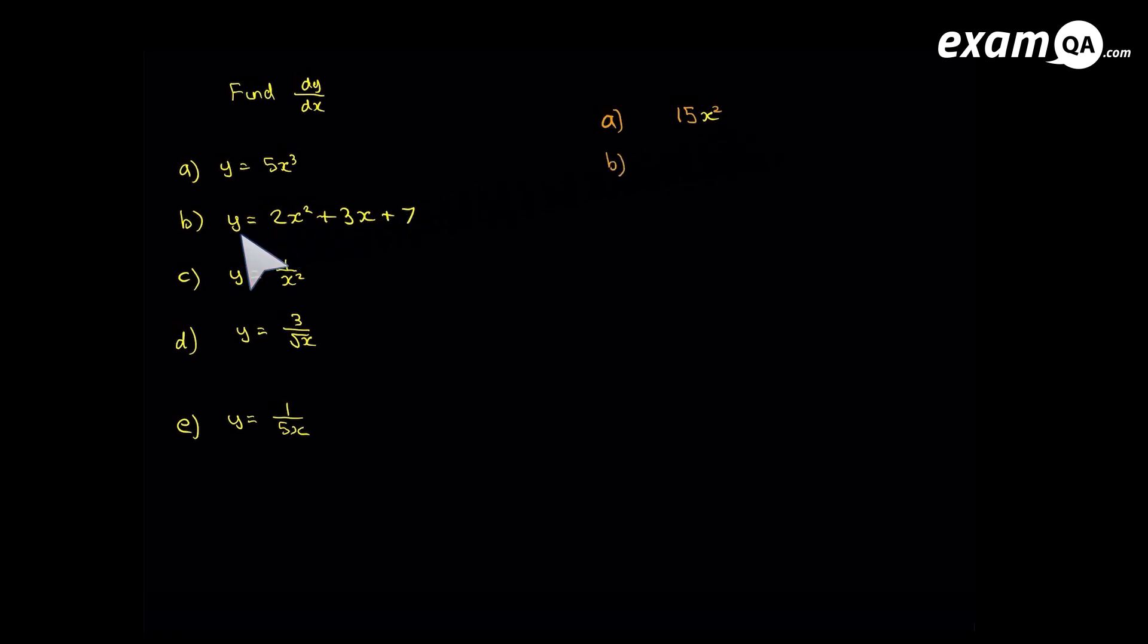Let's look at b. So in b, we've got a few terms we need to differentiate. Let's differentiate the first one. So the power is 2, and the number in front is 2. 2 times 2 gives us 4. So it will be 4x, and that's 4x to the power of 1. And of course, when the power is 1, it doesn't need to be there. So when we see x on its own, we assume the power is 1.